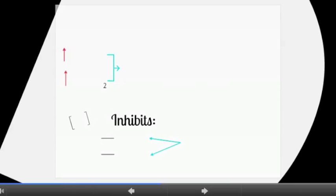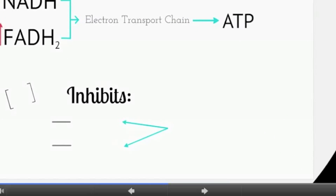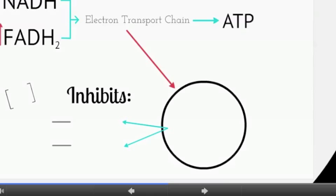The increased oxidation of glucose and lipids provides excess electron donors, NADH and FADH2, to the mitochondrial membrane's electron transport chain to undergo oxidative phosphorylation and generate the cell's energy currency, adenosine triphosphate. In order for ATP generation to remain constant, electrons are leaked from various complexes in the electron transport chain, donating their electrons to molecular oxygen, and thereby generating reactive oxygen species.